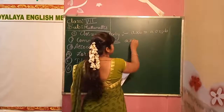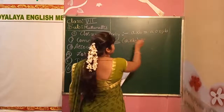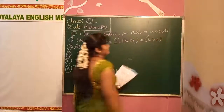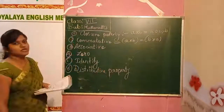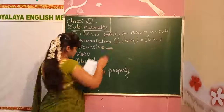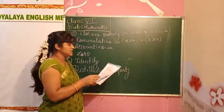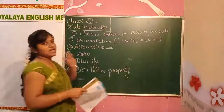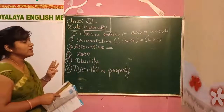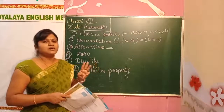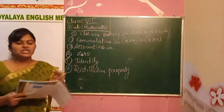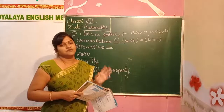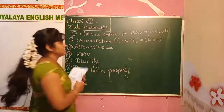In the commutative property, we are just reversing the order. If we have A and B, we just reverse it to B into A. This is called the commutative property. The next one is the associative property. When we have 3 integers, we may group them in a different way and still get the same answer.